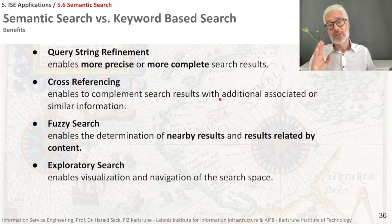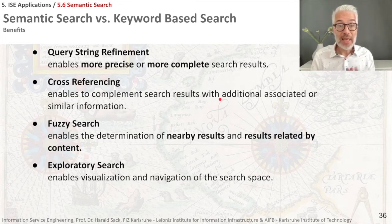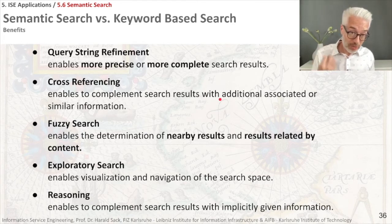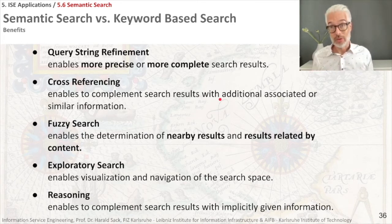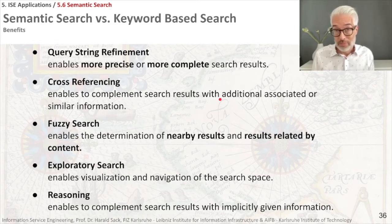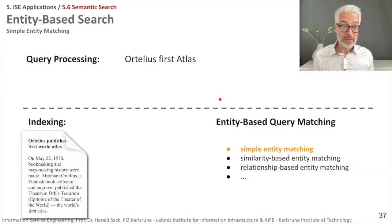This then leads you to something which is called exploratory search, and this goes hand in hand with a visualization of your search space because this enables navigating and exploring your search space. We will do this in the next section of the lecture. And of course, if you deploy reasoning — which is possible if you have a knowledge base and knowledge graph with ontologies underlying your search — this enables you to complement your search result with implicitly given information which is not directly there. These are the possibilities you have to extend your traditional search when you do semantic search.